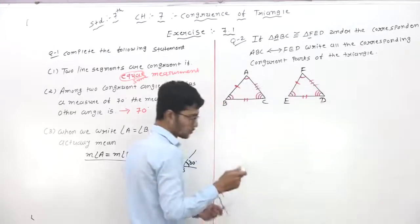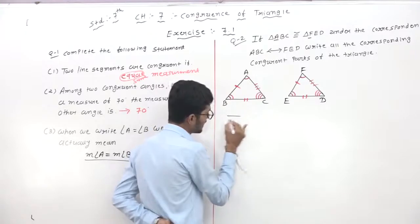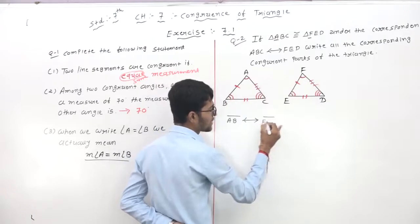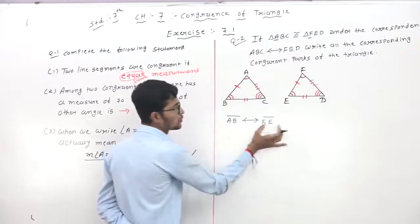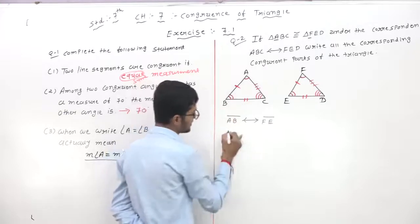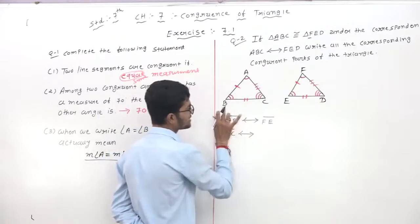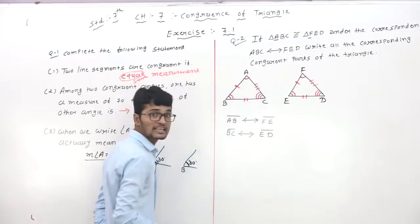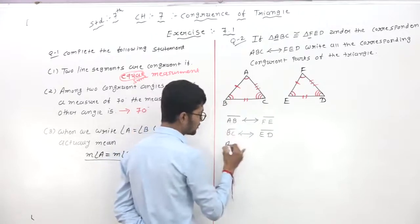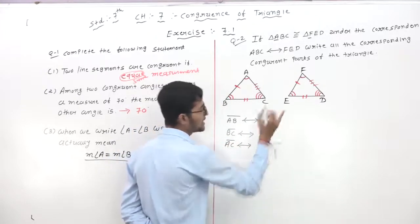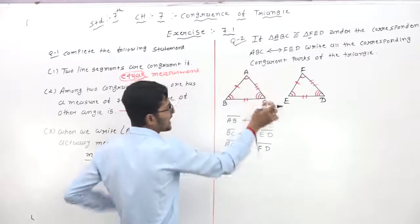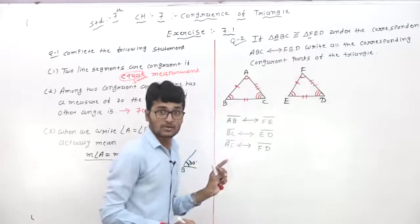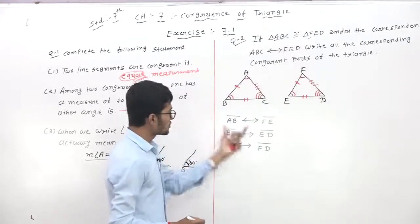Now write down the corresponding sides. Side AB corresponds to FE; side BC corresponds to ED; side AC corresponds to FD. So AB corresponds to FE, BC corresponds to ED, and AC corresponds to FD. These are the corresponding sides of the two congruent triangles.